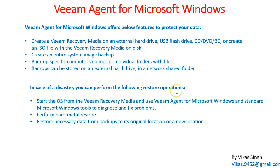In case of disaster, you can perform the following restore operations: if we have a failed virtual machine or physical server, we can recover those machines using these options. You can start your OS from the Veeam recovery media and use Veeam Agent for Microsoft Windows and standard Microsoft Windows tools to diagnose and fix the problem. We can also perform a bare metal restore — if the hardware fails, we can take the backup to another server via external drive or network share and restore to a brand new physical server.